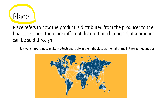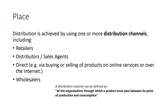Now we're going to talk about place. Place refers to how the product is distributed from the producer — the maker, the business — to the final consumer. There are different distribution channels that a product can be sold through. It is important to make products available in the right place, at the right time, in the right quantity. Distribution is achieved using one or more distribution channels, including retail, distributors, sales agents, and direct buying or selling of products online.